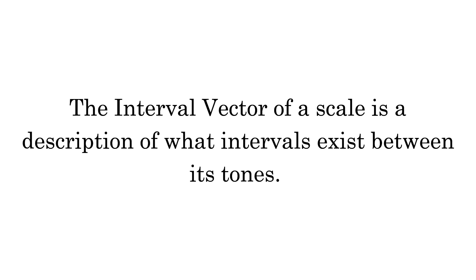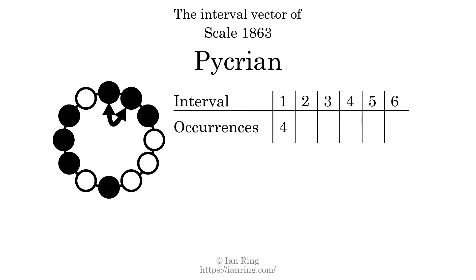The interval vector of a scale is a description of what intervals exist between its tones. There are four intervals with the size of one semitone, shown here. There are four intervals with the size of two semitones, shown here.